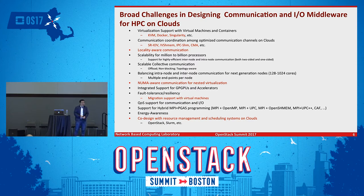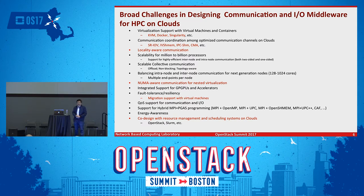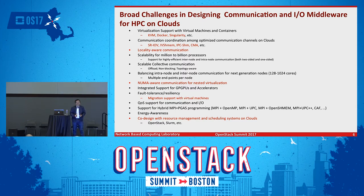Another challenge is locality — how to detect where your MPI processes are running across virtual machines or containers. If two processes are co-located on the same host but in different VMs, you should use a better communication channel rather than going through the network, to achieve better performance. There are also challenges around scalability, collectives, intra-to-inter-node communication, and NUMA awareness. Because VMs or containers can be bound to different cores and NUMA domains, your communication stack should account for those NUMA effects.